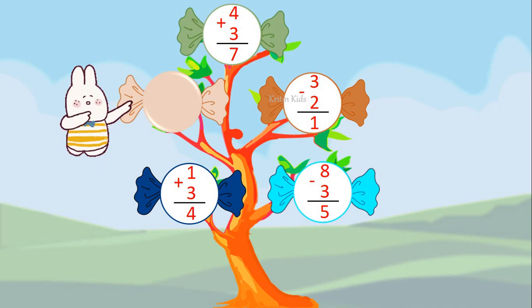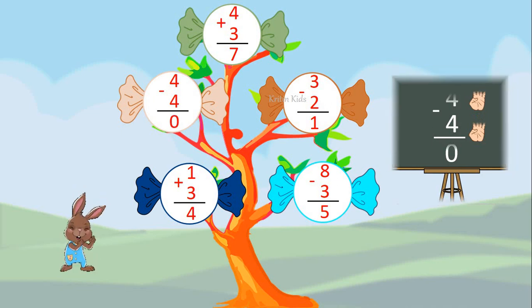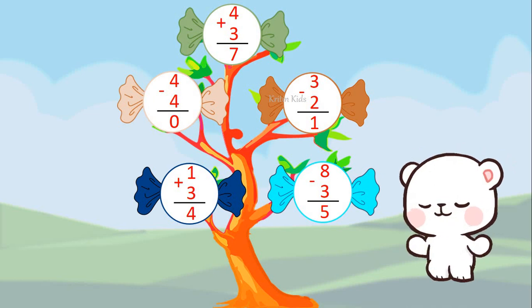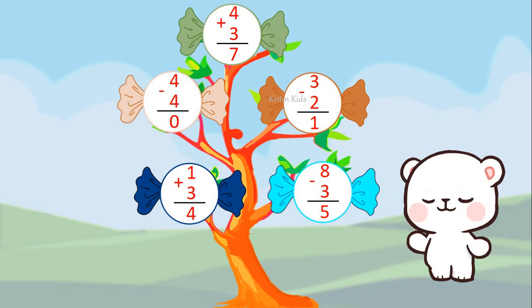This is the last one. Four minus four. What do we get? Open four fingers, close four fingers. It is zero. Four minus four is zero. Aha! I have got all the five candies. Thank you!